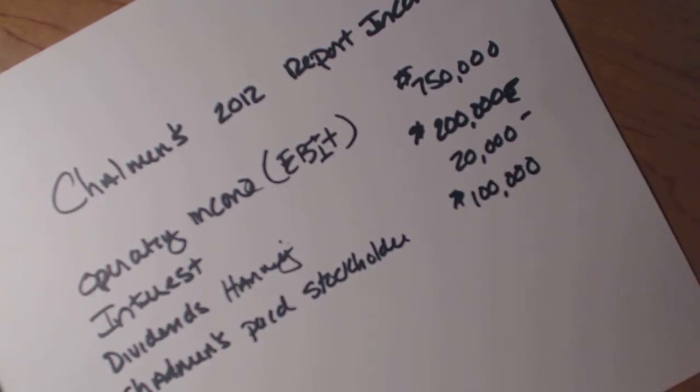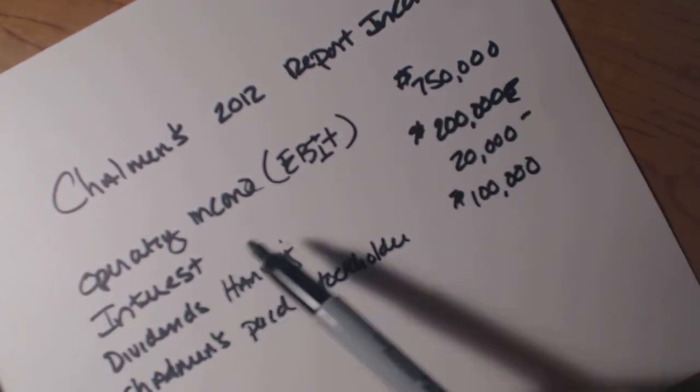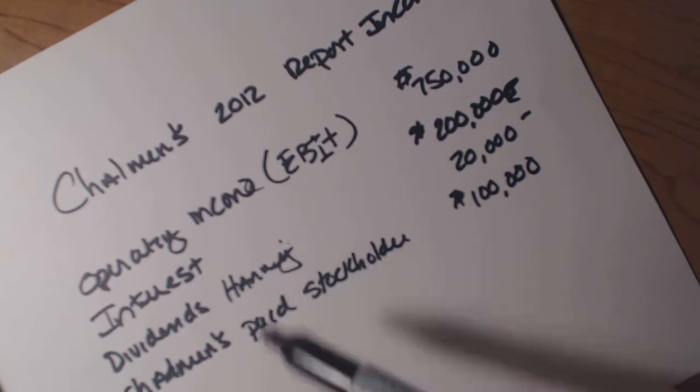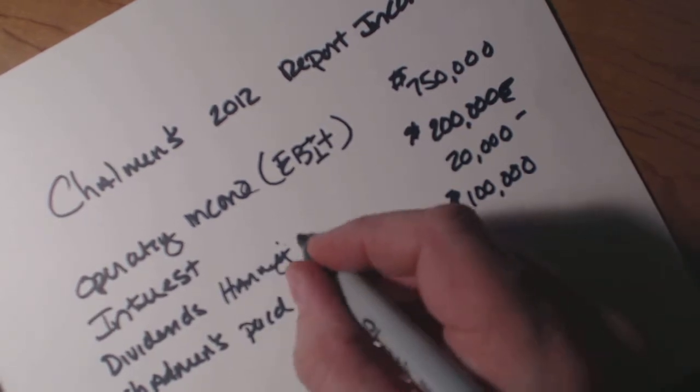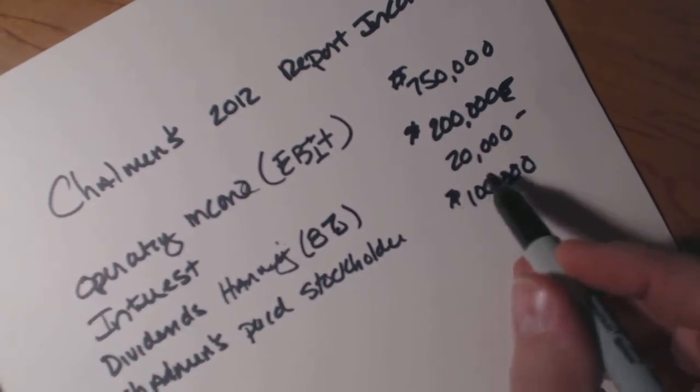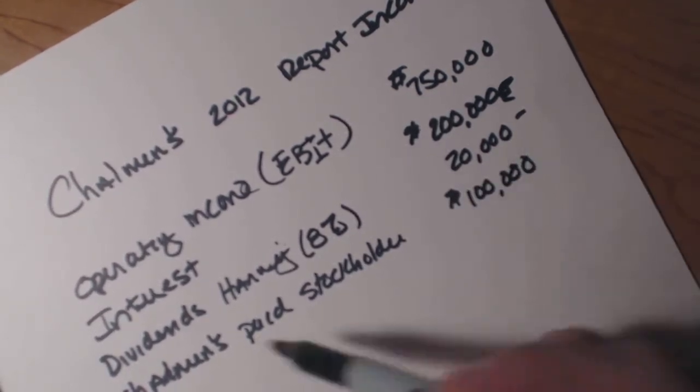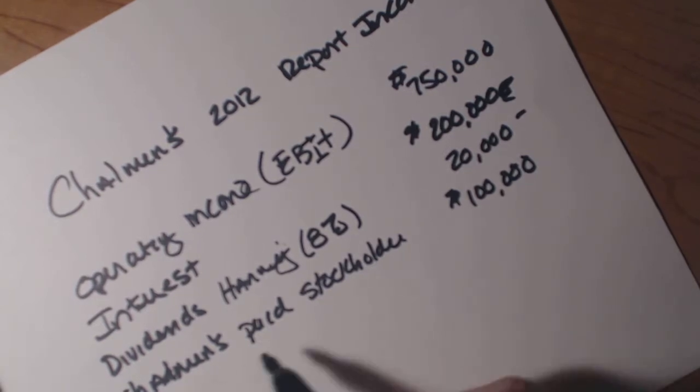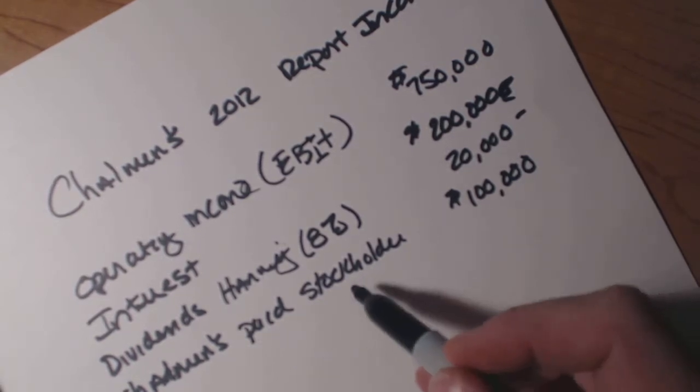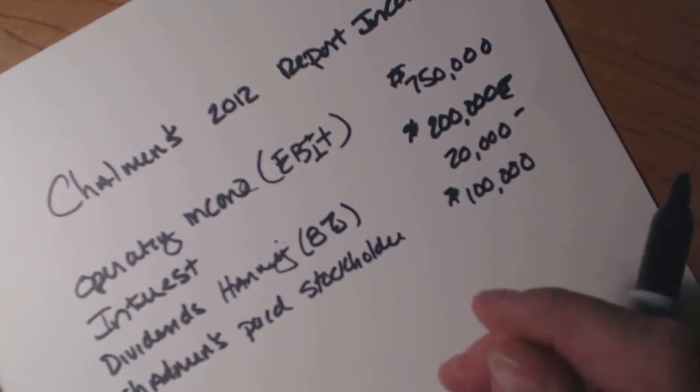Okay, so here's what we've got. We have an operating income of $750,000, an interest of $200,000, and dividends because they own a company called Harvey. They own 8% of Harvey, and by owning 8% of Harvey, they got $20,000 in dividend payments themselves. Then they're going to pay out money to their stockholders, which is going to be a negative as it comes out of the accounts.